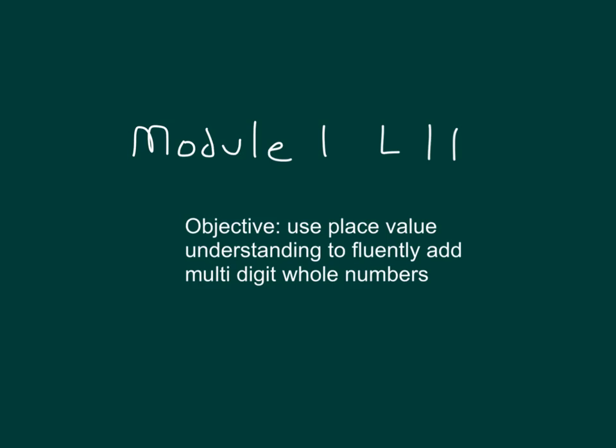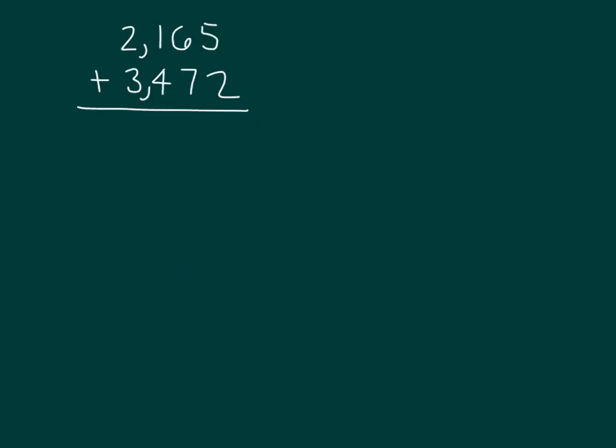The objective today is to use place value understanding to fluently add multi-digit whole numbers. Read this problem with me. We have 2,165 plus 3,472.